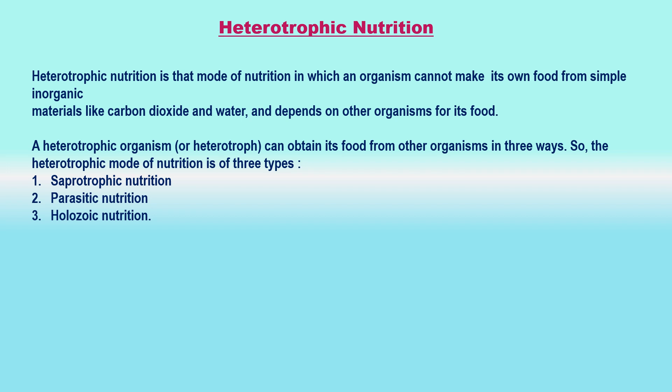A heterotrophic organism can obtain its food from other organisms in three ways, so the heterotrophic mode of nutrition is of three types: (1) saprotrophic nutrition, (2) parasitic nutrition, and (3) holozoic nutrition. Saprotrophic nutrition is that nutrition in which an organism obtains its food from decaying organic matter of dead plants, dead animals, and rotten bread, etc. Parasitic nutrition is that nutrition in which an organism derives its food from the body of another living organism without killing it. Holozoic nutrition is that nutrition in which an organism takes complex organic food materials into its body by ingestion, the ingested food is digested and then absorbed into the body cells.